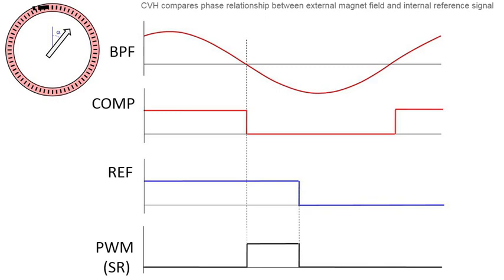Unlike other angle sensor IC technologies that use a dual-channel sine-cosine method for producing an angle measurement, there is no concern with CVH for channel-to-channel offsets, which may result in higher accuracy errors.